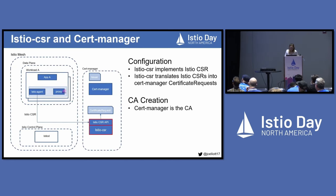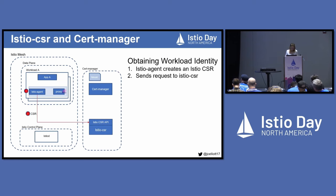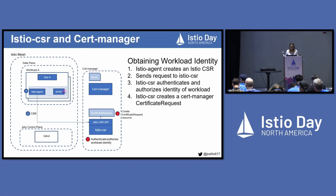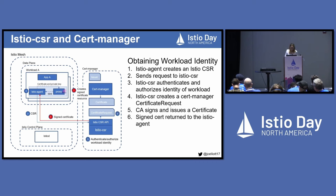The next solution leverages the Istio CSR project provided by cert-manager. It implements the Istio CSR API and is responsible for translating Istio CSRs into cert-manager certificate requests, with cert-manager as your CA. To obtain workload identity, it all starts with the Istio certificate signing request, but instead of sending the request to Istio-D, you provide configuration to send the request directly to Istio CSR, which implements the Istio CSR API. Istio CSR authenticates and authorizes the workload identity, creates a cert-manager certificate request, the CA signs and issues a certificate, and the signed cert is returned to Istio agent.